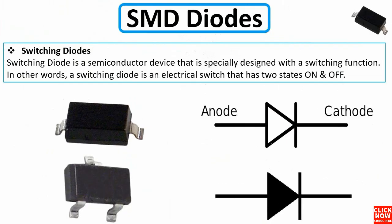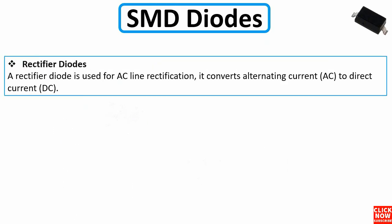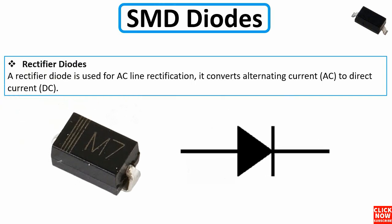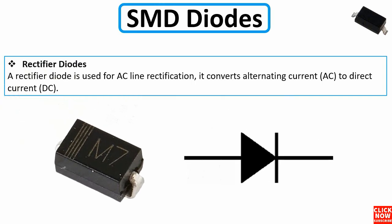A switching diode is a semiconductor device specially designed with a switching function. In other words, a switching diode is an electrical switch that has two states: on and off. The switching diode can look like this, with two or three terminals as you can see.